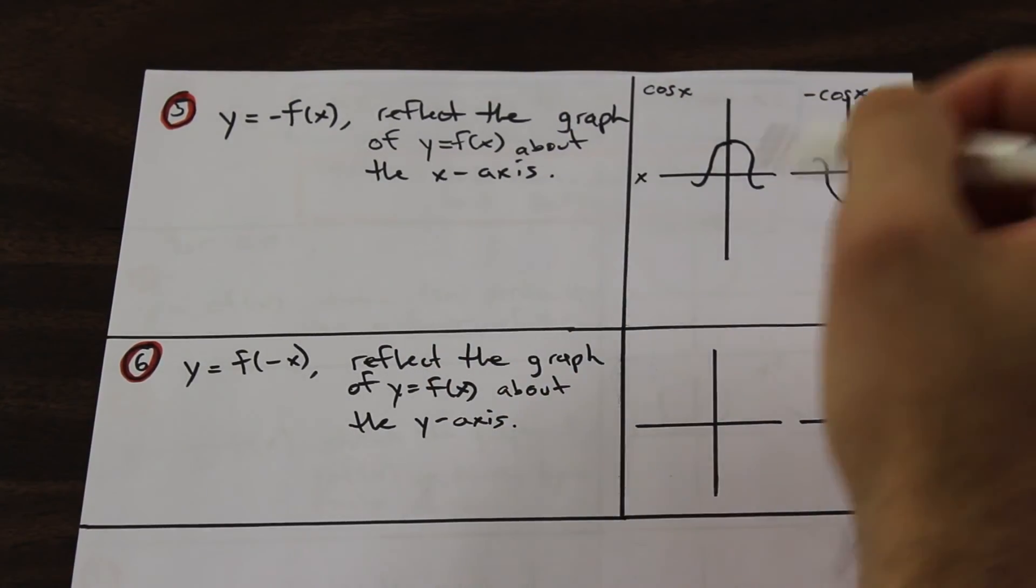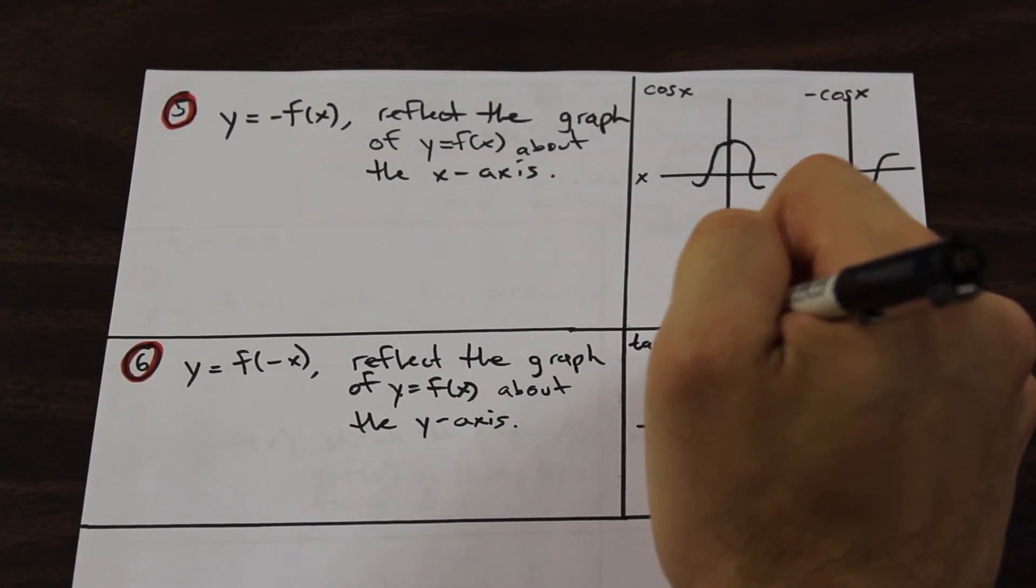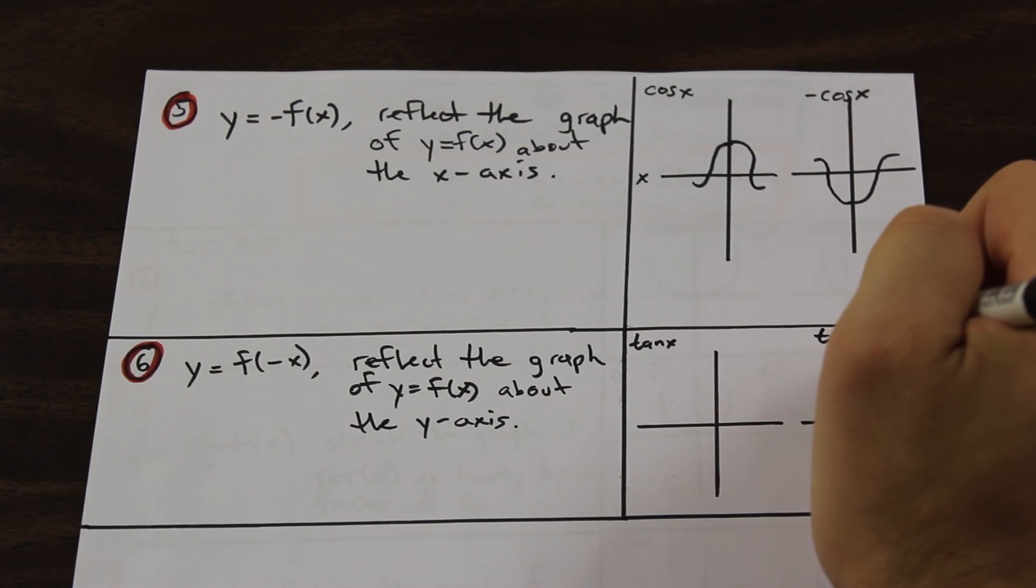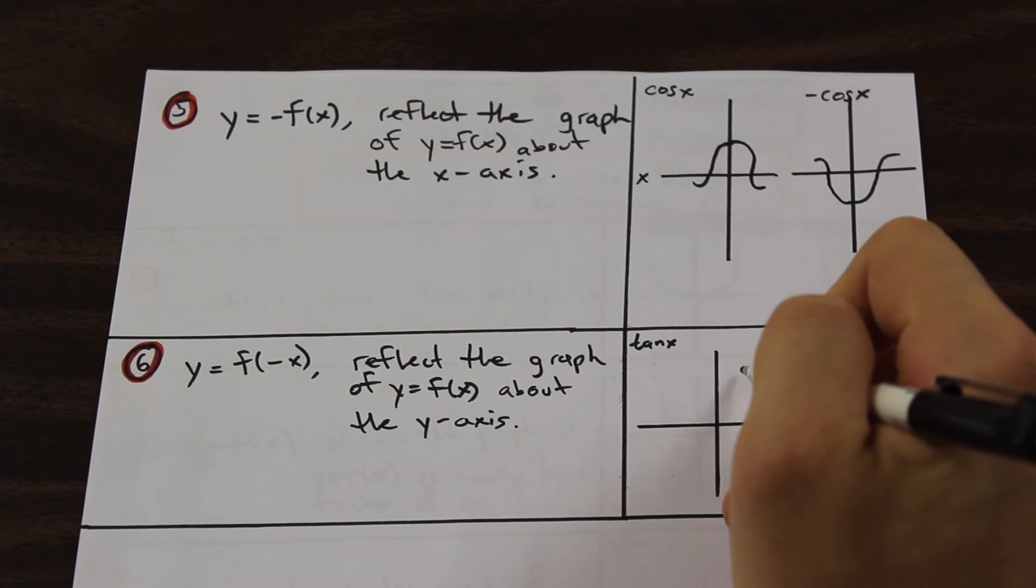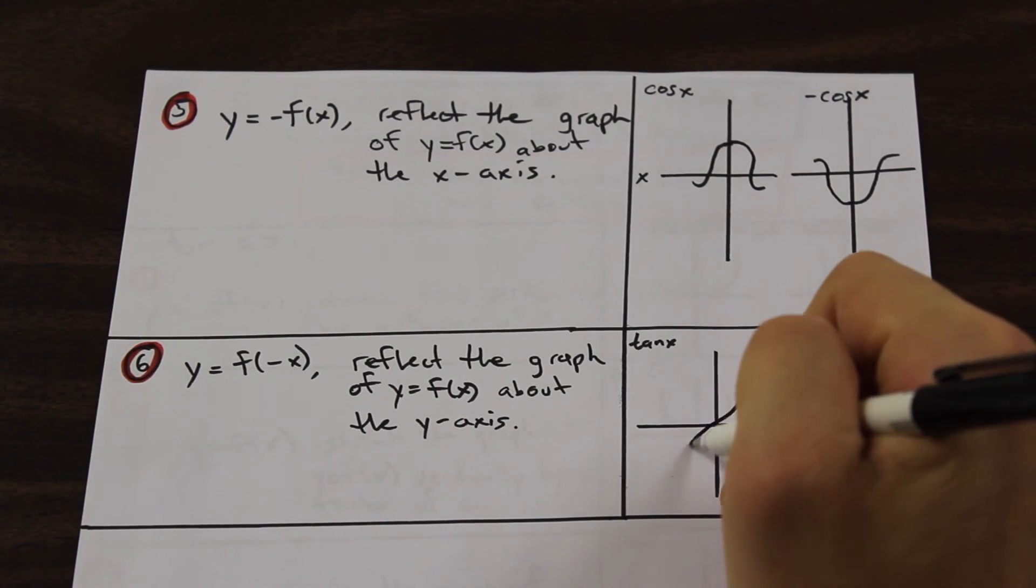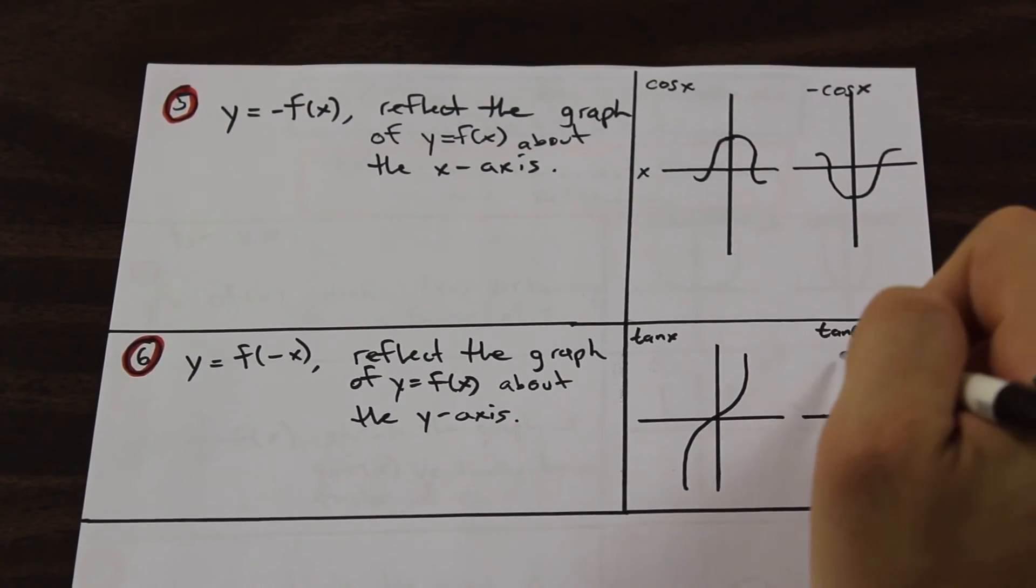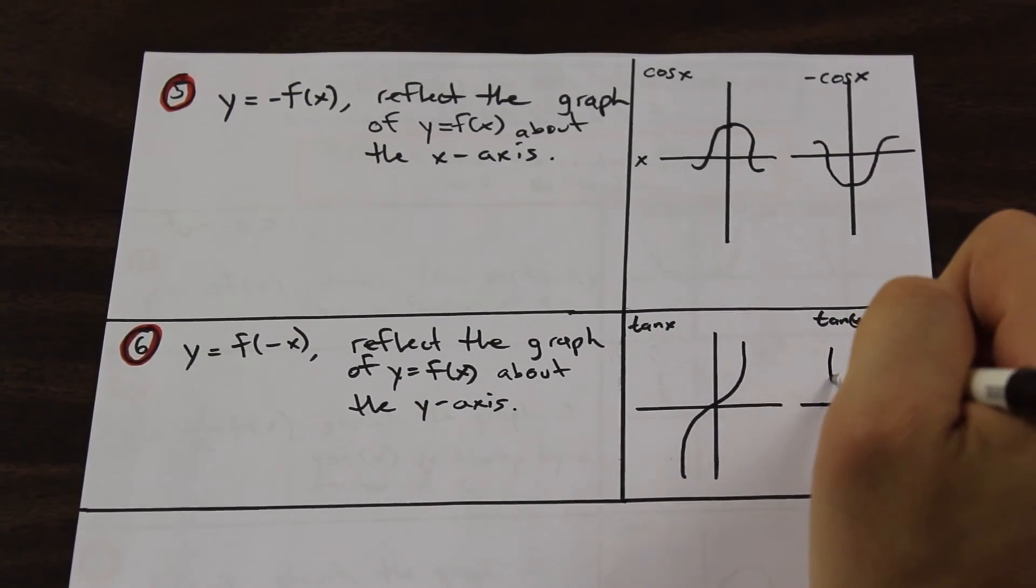So we're going to do tan x, and tan of negative x. And what that's going to look like is, we have tan here, and tan of negative x is going to look like this.